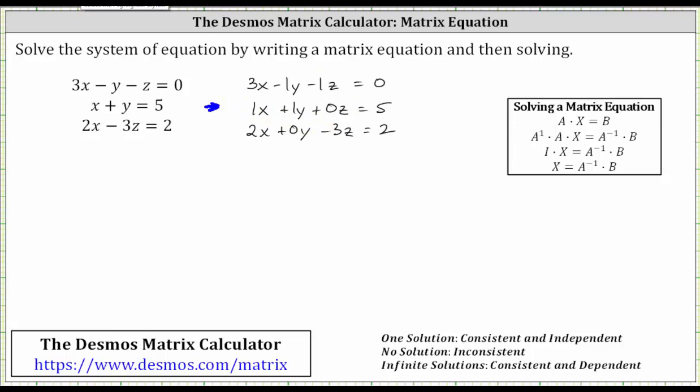To write the matrix equation, we begin with the coefficient matrix where the coefficients of x, y, and z from each equation give us the elements in a row. We have a three by three coefficient matrix where the first row from equation one is 3, negative 1, negative 1.